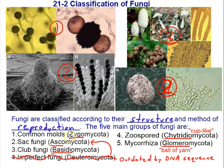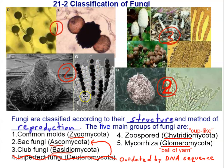Ascomycota are named for their sexual reproductive structure known as an ascus. Ascus means 'sac,' so these are also known as sac fungi. Each stack of spores is contained within a sac-like structure, which is why whoever first looked at these spore-producing structures under the microscope felt they looked like sacs full of spores — hence the name sac fungi, where 'asco' refers to that sac sexual reproductive structure.